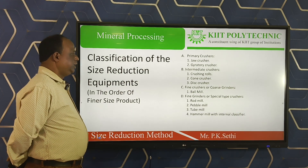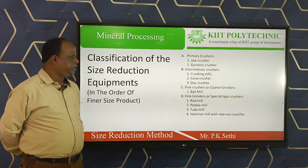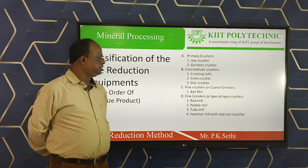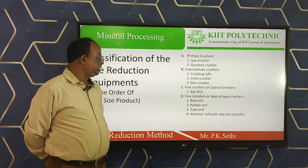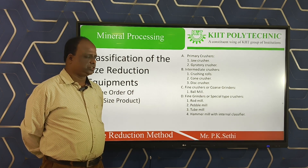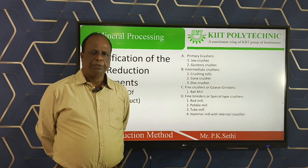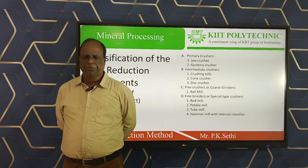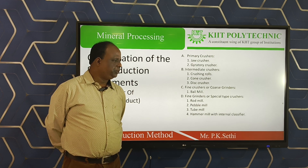Next, the classification of size reduction equipment — the equipment used for reducing the size of minerals. According to the product size or the feed size, the crusher is divided into four types: one is primary crusher, second is intermediate crusher, third is fine crusher or coarse grinder, and fourth is fine grinder or a special type of crusher. Primary crusher means minerals are crushed using the jaw crusher or gyratory crusher, with materials coming directly from the mines.